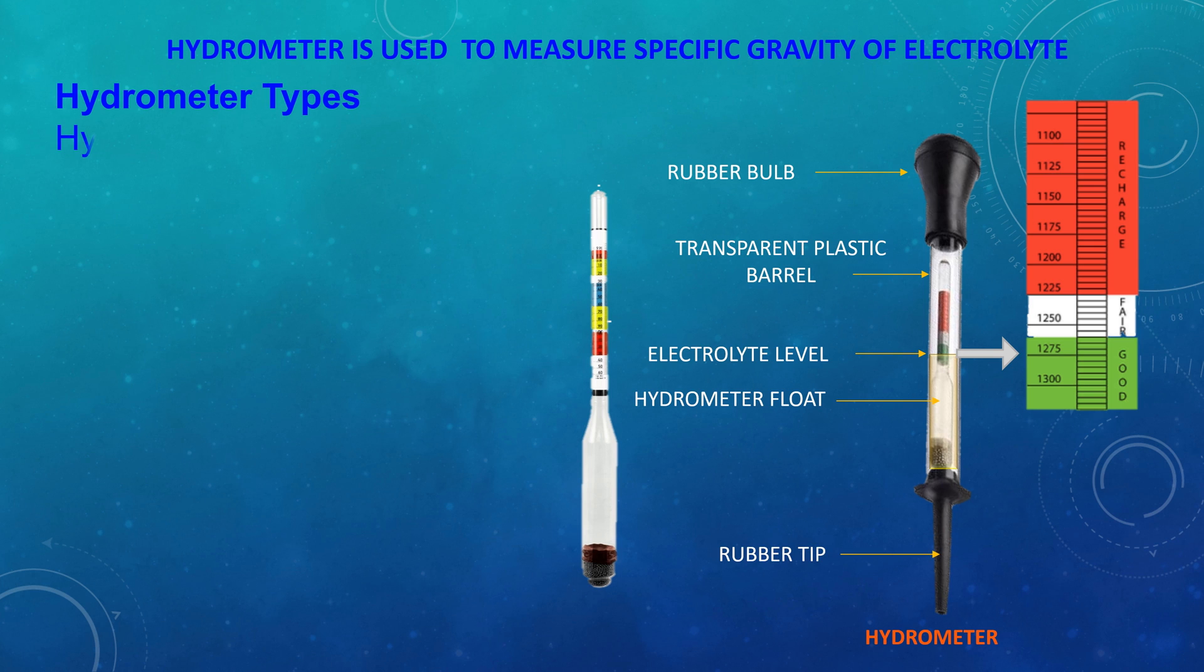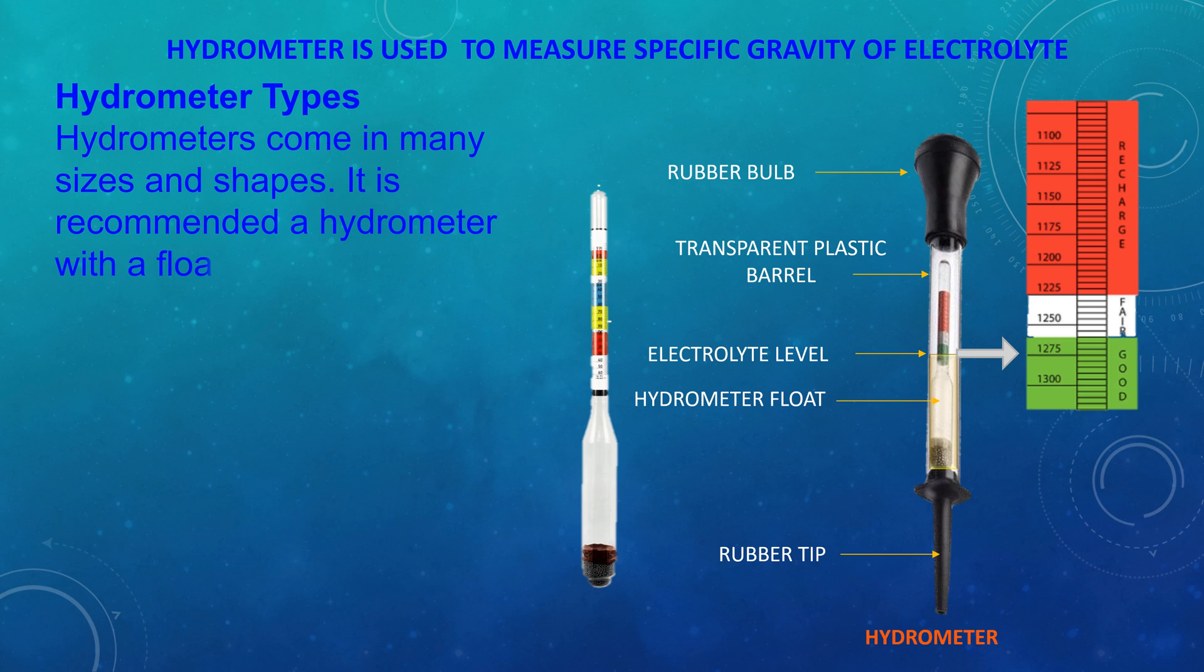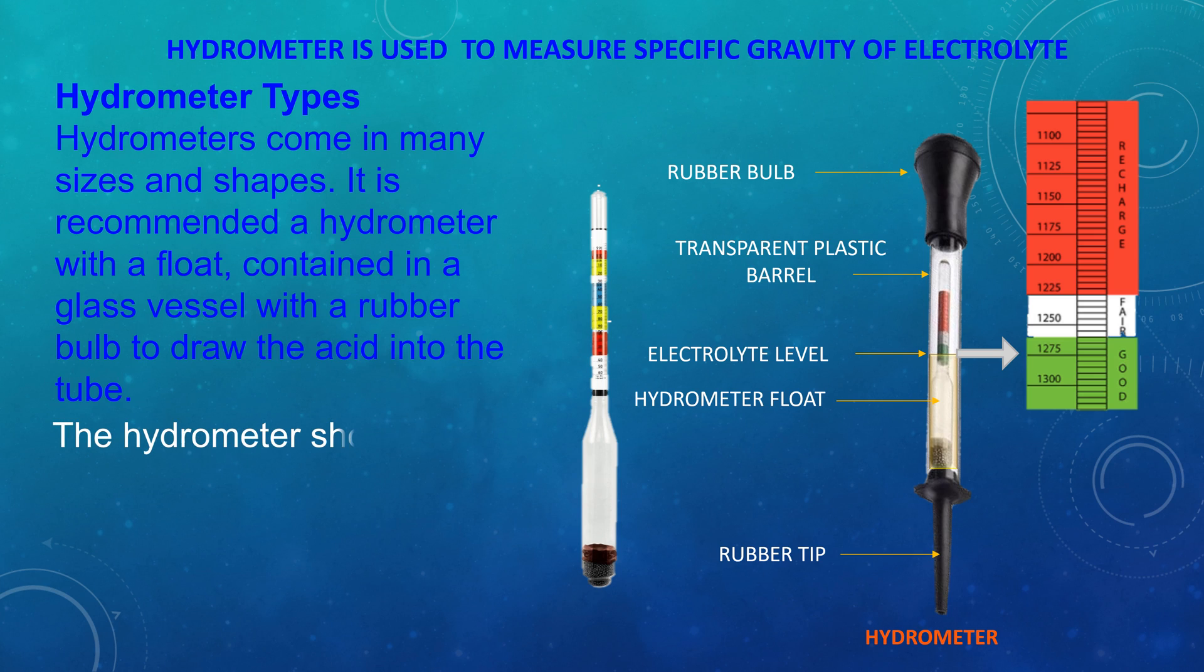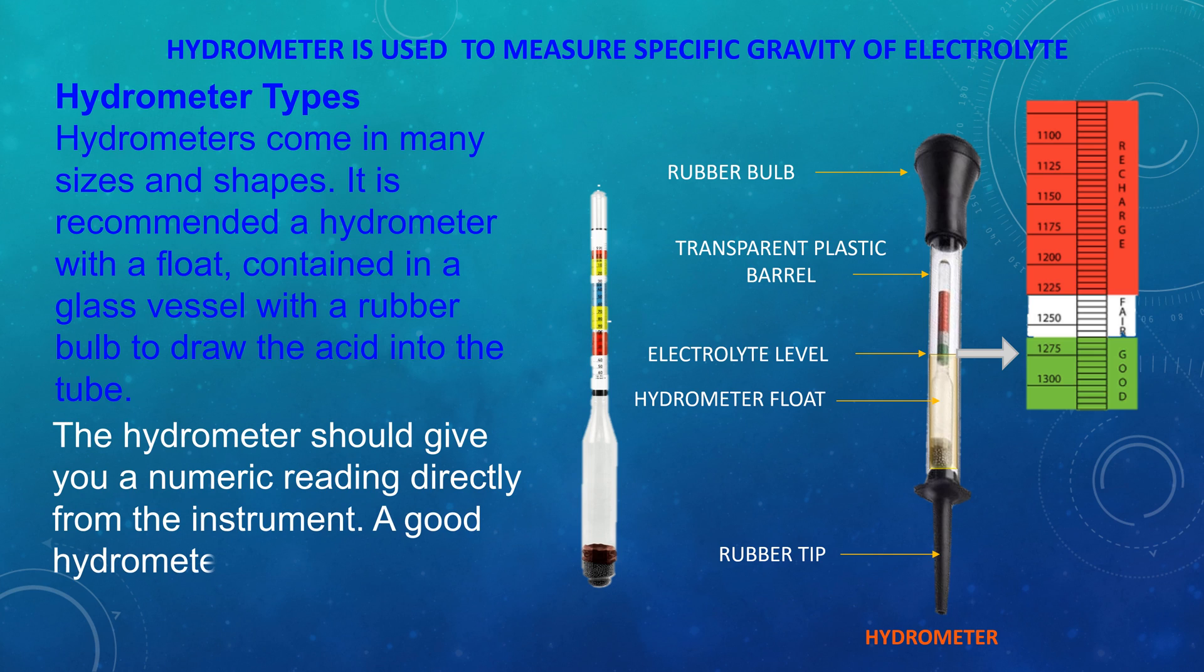Hydrometer types: Hydrometers come in many sizes and shapes. It is recommended a hydrometer with a float contained in a glass vessel with a rubber bulb to draw the acid into the tube. The hydrometer should give us a numeric reading directly from the instrument. A good hydrometer is accurate to plus minus 0.005 points. So, 1.270 could read from 1.265 to 1.275.